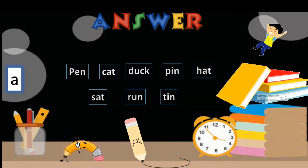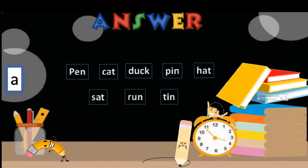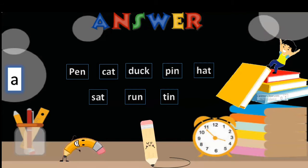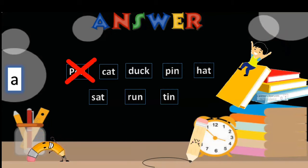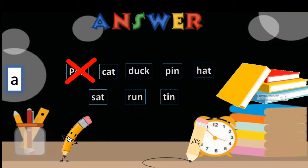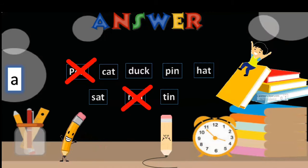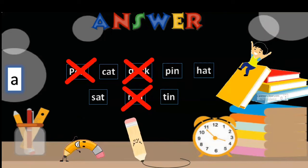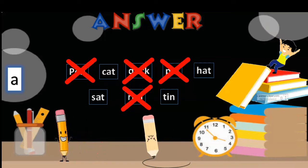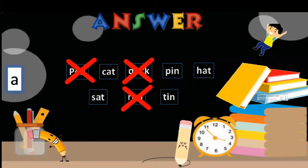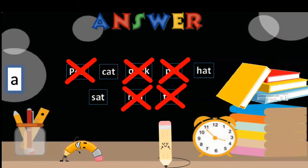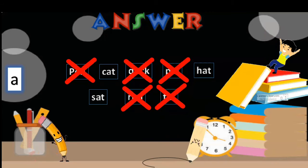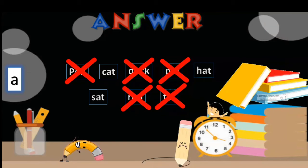And here we go, answer! So you have to cut, you have to cut what is wrong, which is not from A family. So what you have to do, cross it if it does not belong to the family of A. So pen, is it? No. Then cat, yes it is. But run is not the family of A because R-U-N. Then next, duck, does it belong to A? No, so it is not the family of vowel A. Then next, pin, P-I-N does not belong. So cut it off. Then next one is tin, T-I-N, no. So we got the answer. So cat, C-A-T, cat belongs to the family of A. H-A-T, hat belongs to the family of A. S-A-T, sat belongs to the family of A.